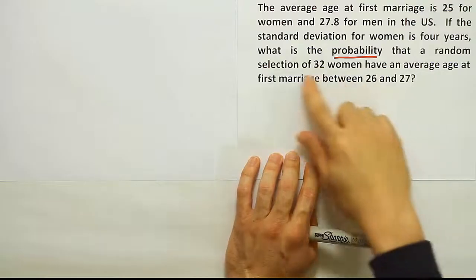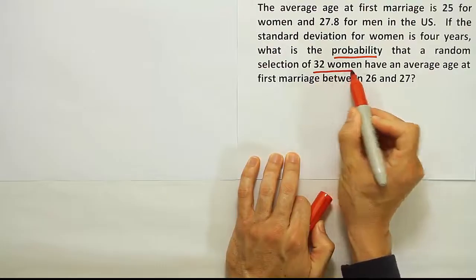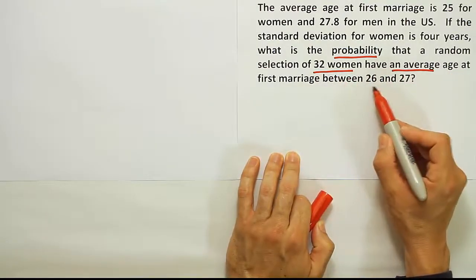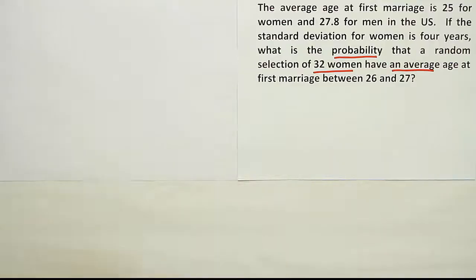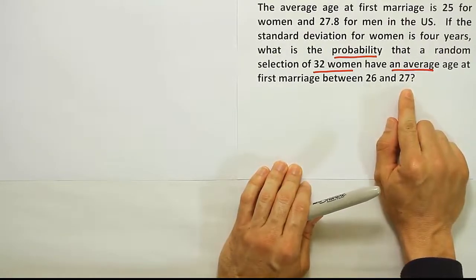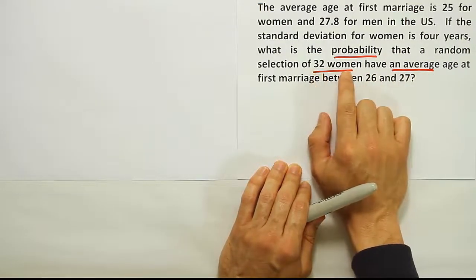But I do see that it's the probability that a random selection of 32 women have an average age at first marriage between 26 and 27. This problem is a probability problem about an average, an average that's derived from 32 women.